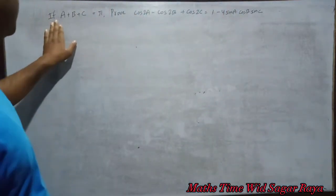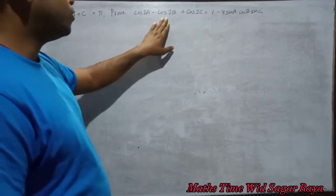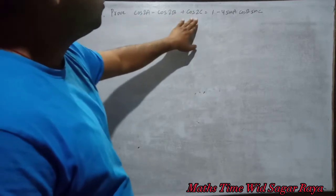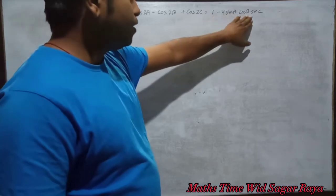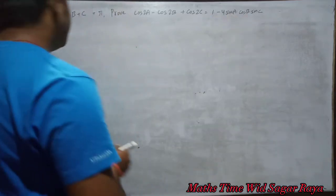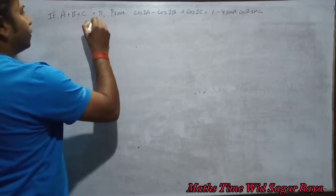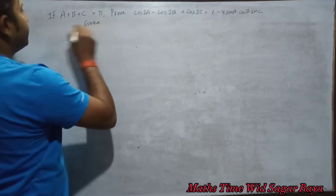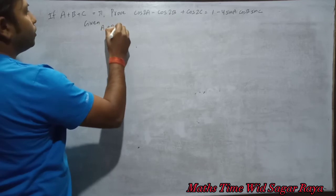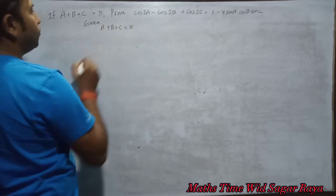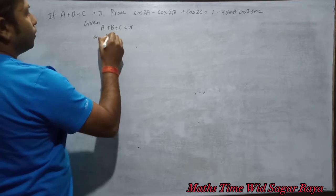The question is: if A plus B plus C equals pi, prove that cos 2A minus cos 2B plus cos 2C equals 1 minus 4 sin A cos B sin C. So the given information is A plus B plus C equals pi.